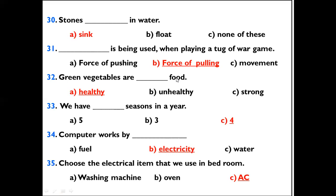Question 33: We have dash seasons in a year. Options: 5, 3, 4. The right option is 4. We have four seasons in a year.